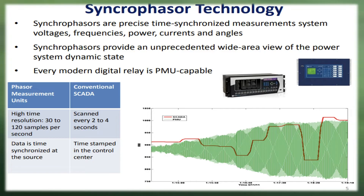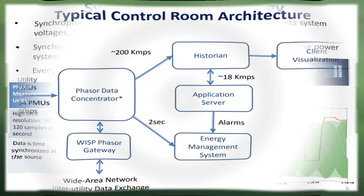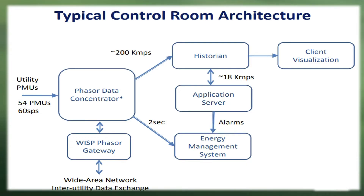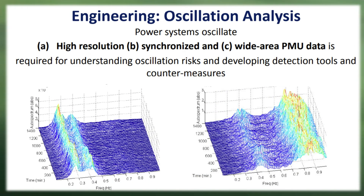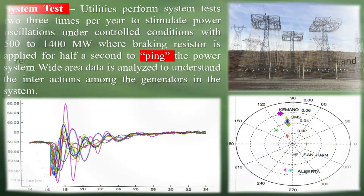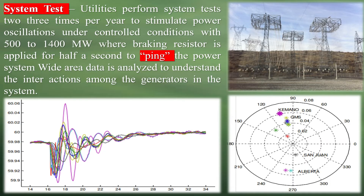Applications include wide area situational awareness and monitoring, state estimation, fault location and protective relaying, islanding detection, and more. The technology helps monitor power system parameters such as frequency, phase angle, and amplitude to ensure those system parameters are always within limits. It is an effective means of monitoring the small signal stability of a power system online, and is particularly useful for observing power system dynamic phenomena and for real-time control of the power system.